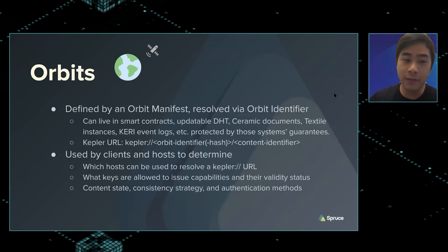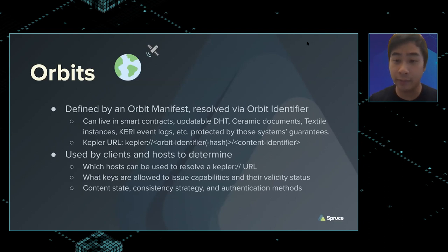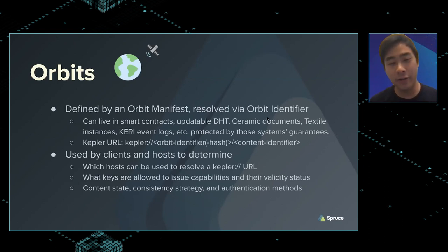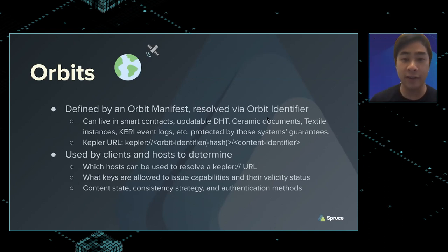So what's an orbit? An orbit is a data overlay defined by an orbit manifest, resolved by what we call an orbit identifier. They can live in a bunch of places. We like smart contracts because it solves a lot of problems — if you're setting permissioning, the orbit commander can set who can read and write, and you can use the smart contract itself to manage base permissions. Updatable DHTs, as in IPFS log from the OrbitDB project — which is related to Kepler but a different project.